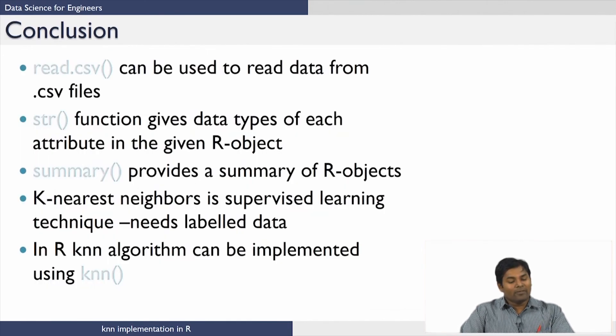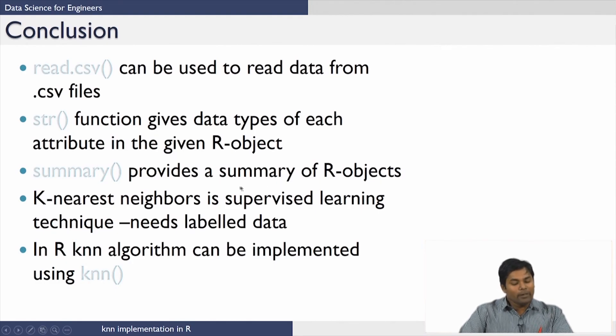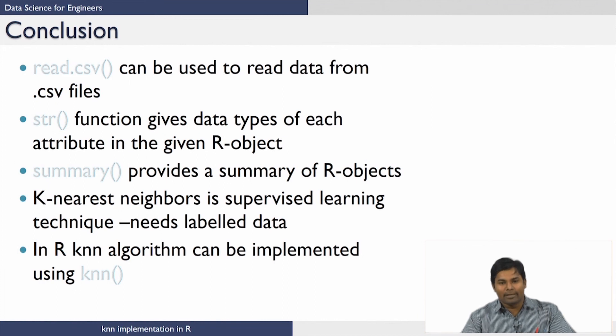In summary, this lecture covered how to read CSV files, how to use the str() and summary() functions to understand data types and summaries of R objects, and how to implement the KNN algorithm — a supervised learning algorithm requiring labeled data — using the knn() function in R. With this, we end this tutorial session on implementing KNN in R. In the next lecture, Professor Raghu will talk about KNN clustering, after which I will return with a case study on KNN clustering implementation. Thank you.